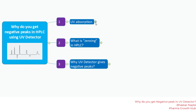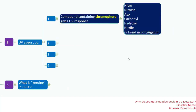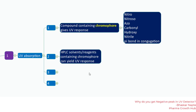The first point is UV absorption. A compound can have UV absorptivity if it contains chromophores. Examples of chromophore groups include nitro, nitroso, azo, carbonyl, hydroxyl, nitrile, or if there is a pi bond in conjugation — your compound can give absorbance in the UV range, for example from 200 nanometers to 400 nanometers. HPLC solvents or reagents containing chromophores can also yield a UV response, which becomes a point of concern because you do not want a response from the diluent you are using.